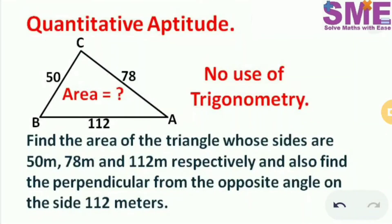Welcome to my channel Solved Maths with Ease. In this question we need to find the area of the triangle whose sides are given as 50m, 78m and 112m. And we also need to find the height of this triangle.